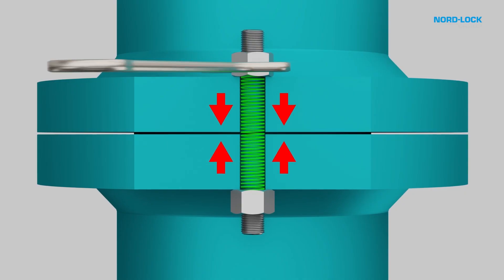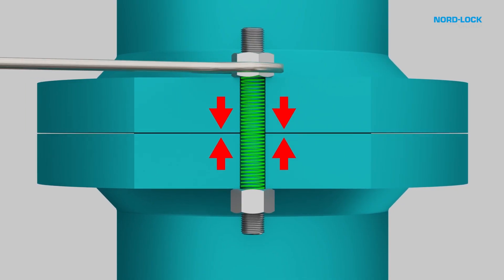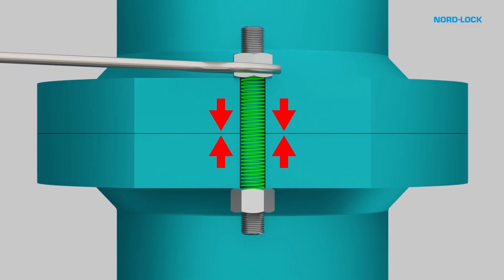By turning the fastener down on the thread helix, the rotary motion transforms into linear motion. This is causing the bolt to stretch while parts are compressed. But only a fraction of the input torque serves to pre-tension the bolt.